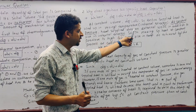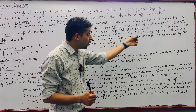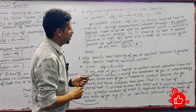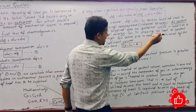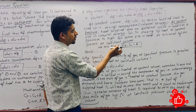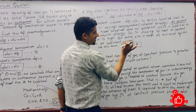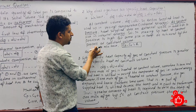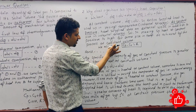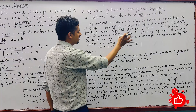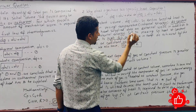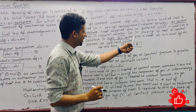Therefore, specific heat capacity at constant pressure is higher for the same temperature rise as achieved at constant volume. We also have the relation Cp - Cv = R, where R > 0. Hence, a gas has two specific heat values.